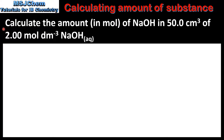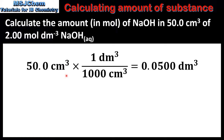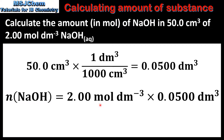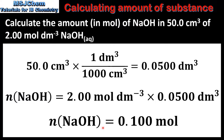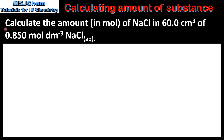In the next example we will calculate the amount in moles of sodium hydroxide in 50 centimeters cubed of a 2 mole per decimeter cubed solution. We start by converting the volume from centimeters cubed to decimeters cubed, then multiply the concentration in moles per decimeter cubed by the volume in decimeters cubed, which gives us an amount of 0.1 moles of sodium hydroxide.